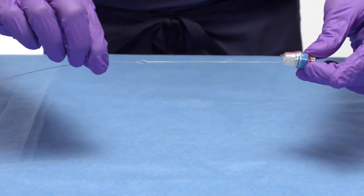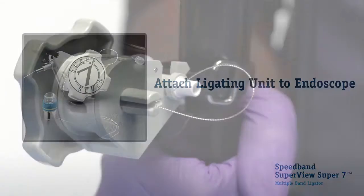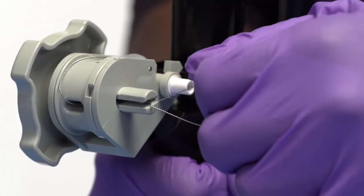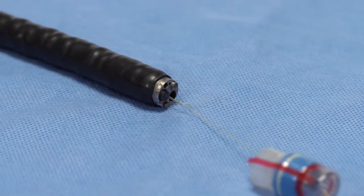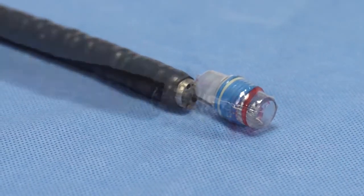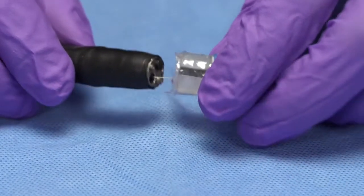Continue by attaching the ligating unit to the endoscope. Grasp the tripwire loop at the proximal end of the handle and retract until the ligating unit contacts the tip of the endoscope. Align the black stripe on the ligating unit with the working channel and push the ligating unit onto the endoscope.